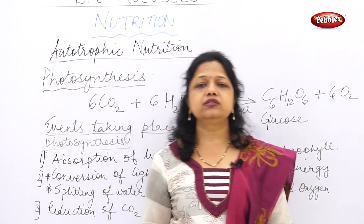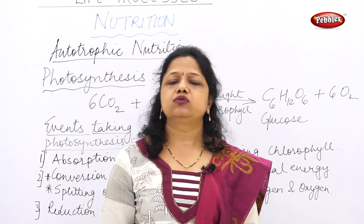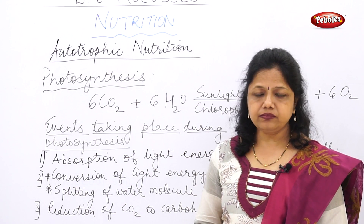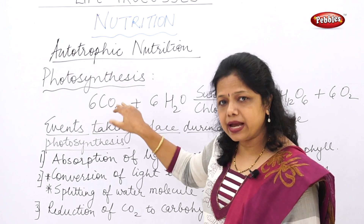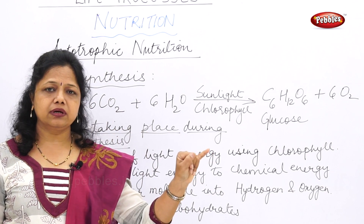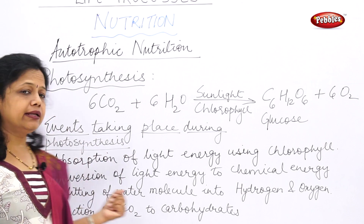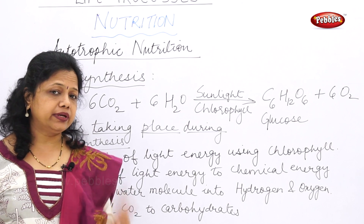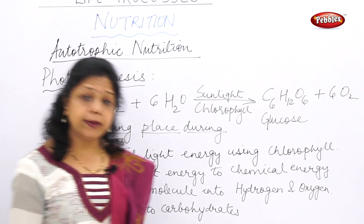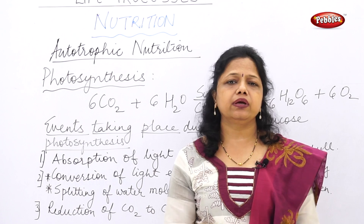This question about the events of photosynthesis in chronological order always comes in exams. Your answer should include: the definition of photosynthesis, the balanced reaction, and then the three events — (1) absorption of light energy by chlorophyll, (2) conversion of light energy to chemical energy and splitting of water into hydrogen and oxygen, (3) reduction of carbon dioxide to carbohydrates.